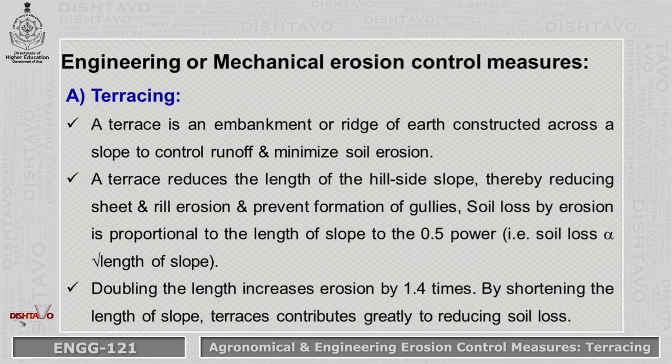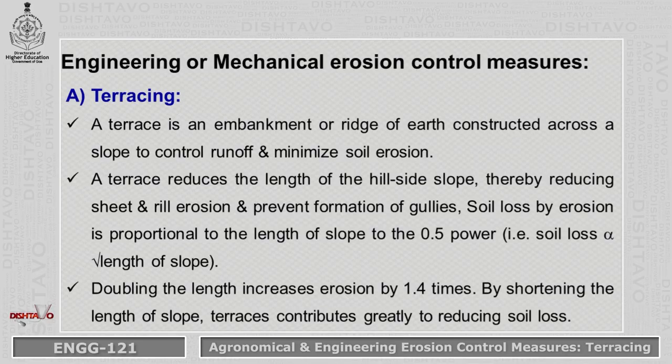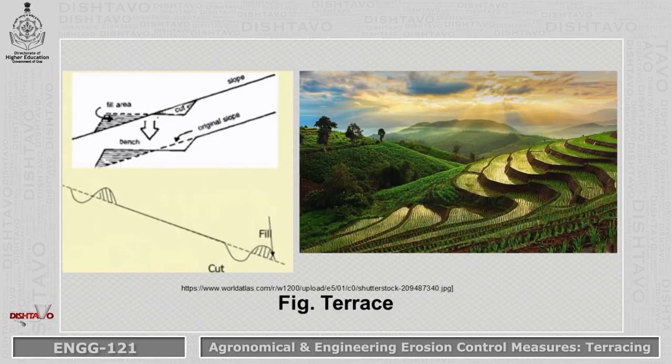Soil loss by erosion is proportional to the length of slope to the power of 0.5, meaning soil loss is directly proportional to the square root of the length of slope. By this formula, doubling the length increases erosion by 1.4 times. So by shortening the length of slope, terraces contribute greatly to reducing soil loss, meaning soil erosion.